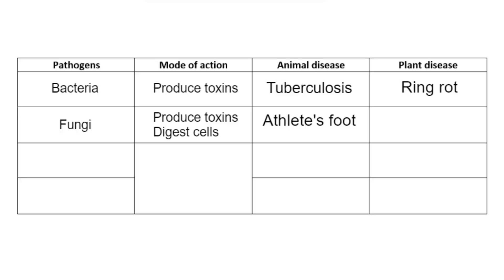For plant fungal diseases, black Sigatoka is an example to be aware of. Similarly to most plant diseases, it destroys the leaves in particular and causes black lines that go across the leaves. This destroys the chloroplasts, meaning the plant can't photosynthesize, reducing the amount of glucose made and impairing the rest of its functions. One of the main targets of black Sigatoka is banana plants.